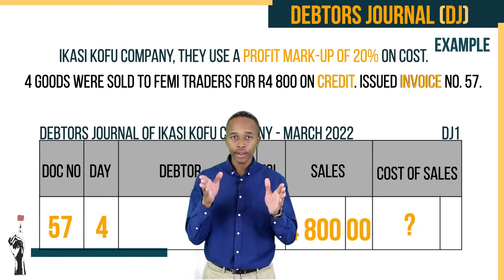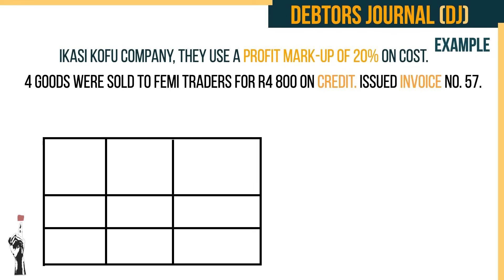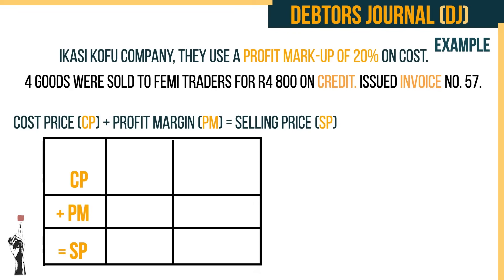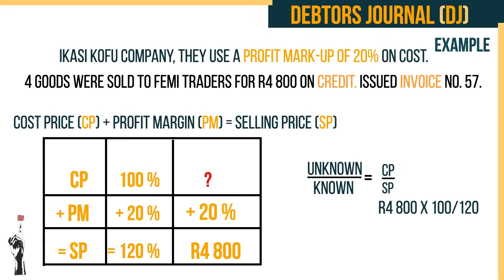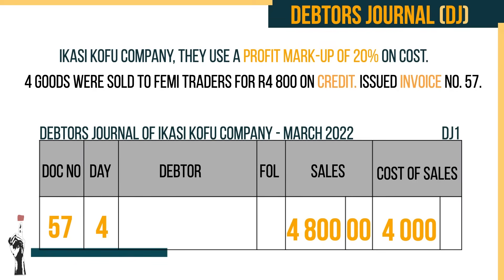When you see cost of sales, think 'grid.' Draw the grid: cost price (CP) plus profit margin equals the selling price. The cost price is always 100%. In this case the profit margin is 20%, which means the selling price is 120%. Use the formula — the unknown is the cost price: R4,800 × 100 ÷ 120 = R4,000. So the cost of sales is R4,000.